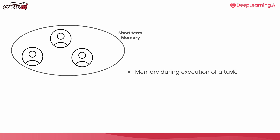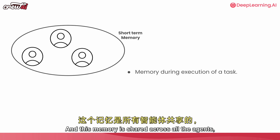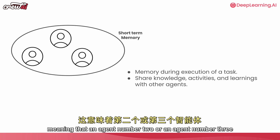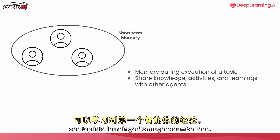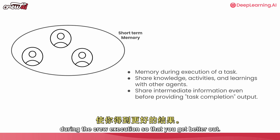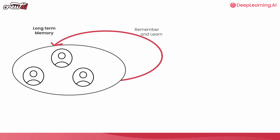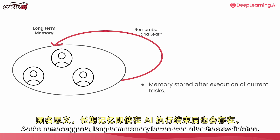Short-term memory is useful because as different agents try to accomplish different tasks, they store different things they learn in this shared memory. This memory is shared across all agents, meaning agent two or agent three can tap into learnings from agent one. So short-term memory helps share context during the crew execution so that you get better outcomes.